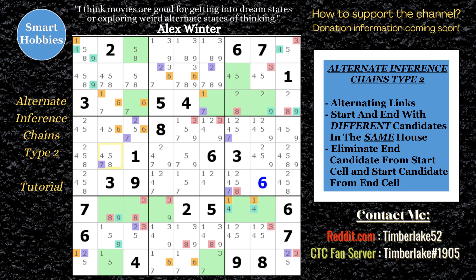First, I want to mention I'll be uploading a bonus video today. I'm going to solve a puzzle by Yoshi Boroshi. It's a special video, so you're getting two videos today. Be on the lookout for that one. This video won't make a lot of sense if you haven't seen my video on alternate inference chains type 1, because this builds upon the AIC type 1. If you don't understand the Christmas lights looking thing I've got going on here, go back, watch the AIC type 1 tutorial, and then come back here.